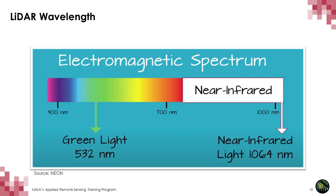Laser altimeters operate in the green or infrared region of the electromagnetic spectrum. LiDARs operating at 1064 nanometers in the near-infrared are ideal for vegetation studies because the signal reflects well off vegetation. However, water absorbs near-infrared energy rather than reflecting it, so it cannot penetrate below the water surface. GEDI's LiDAR sensor operates at 1064 nanometers. LiDARs operating at 532 nanometers in the green part of the spectrum can penetrate through water; ICESat-2's LiDAR operates at 532 nanometers and can detect the seafloor up to 30 meters below the surface in clear water.